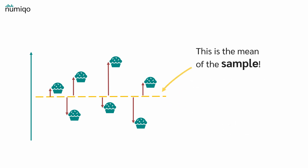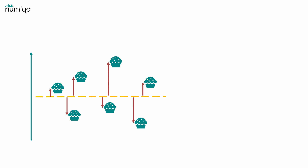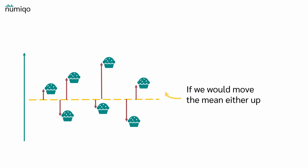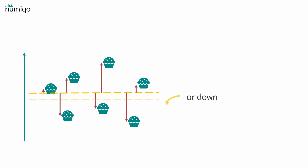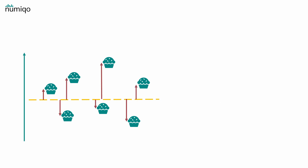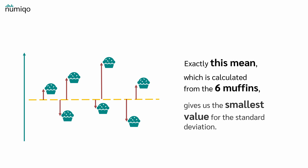This is the mean of the sample, and the sample mean is picked to sit in the middle of your sample. If I had drawn this perfectly, the values above the mean would add up exactly to the values below the mean. But let's assume this is the sample mean. If we would move the mean either up or down, the standard deviation gets bigger in both cases. In other words, exactly this mean — calculated from these six muffins — gives us the smallest value for the standard deviation.